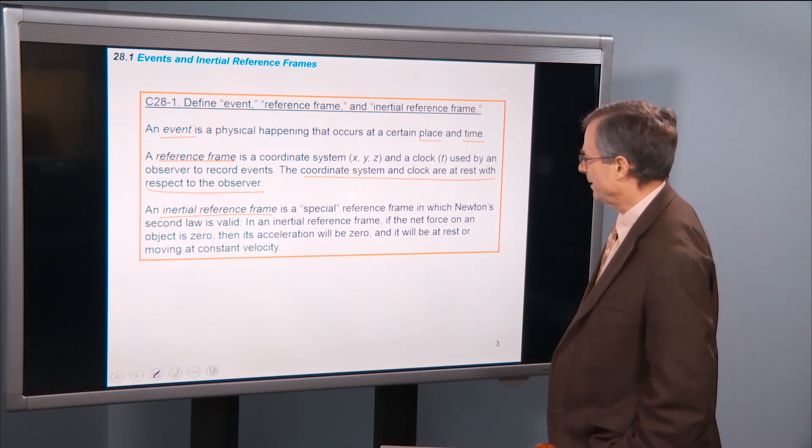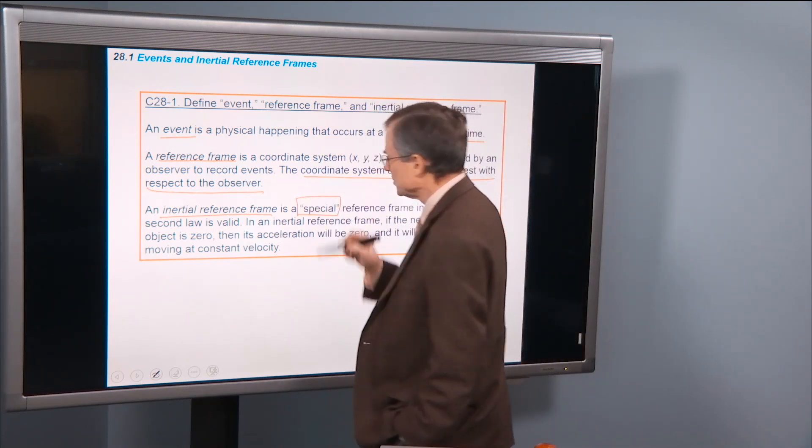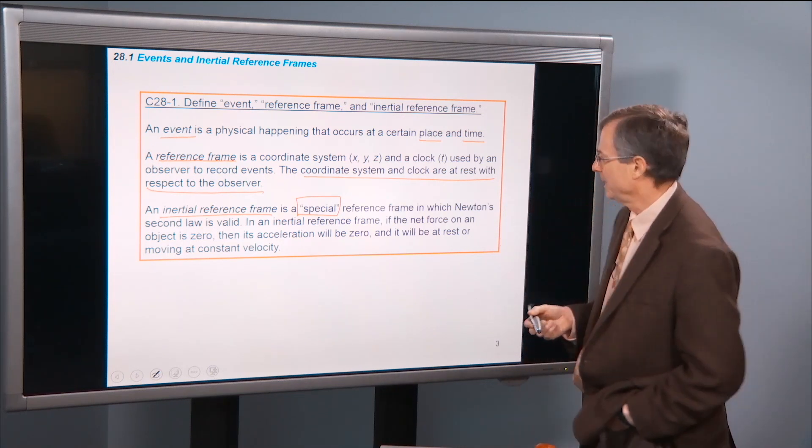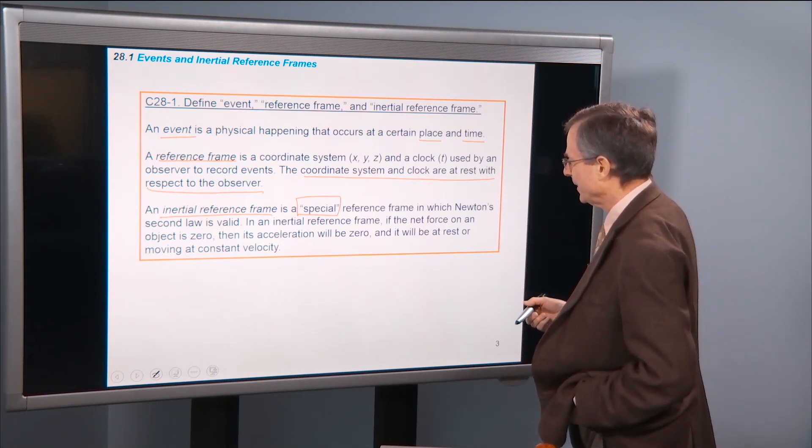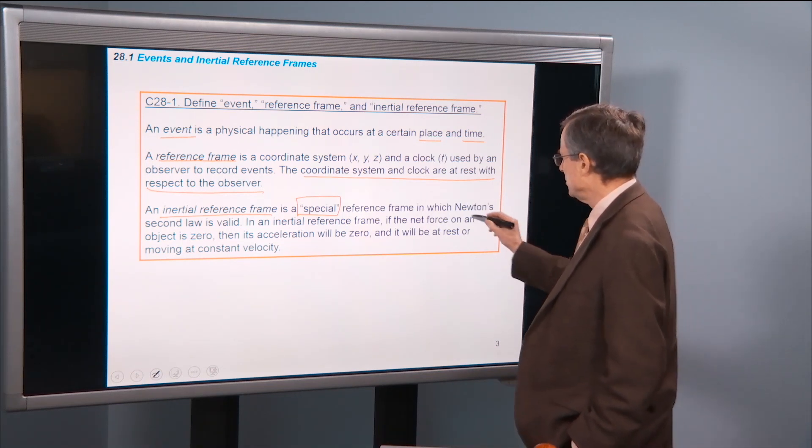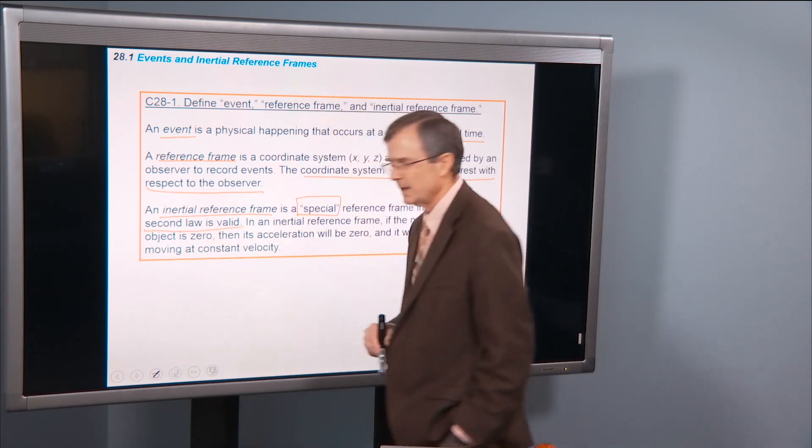So an inertial reference frame is a special reference frame. This is where the Einstein's special theory of relativity gets its name. It's because this reference frame is special. And it's a reference frame in which Newton's second law is valid. F equals ma.